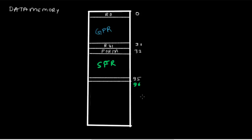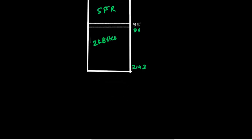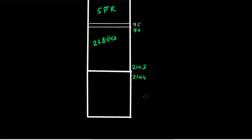After the special function registers, starting at location 96 for the ATmega32, we have 2 kilobytes of RAM. Adding 2048 to 96 gives us 2143 as the last RAM address. If a controller has more than one UART or multiple timers, any additional special function registers required are mapped after the RAM, from location 2144 up to address 65535.